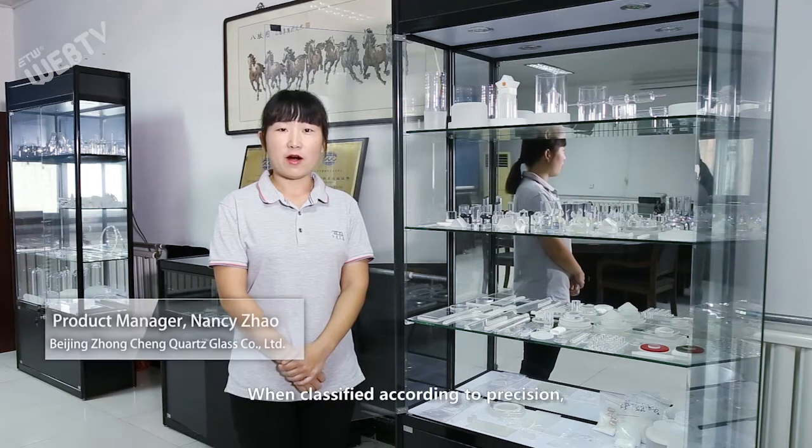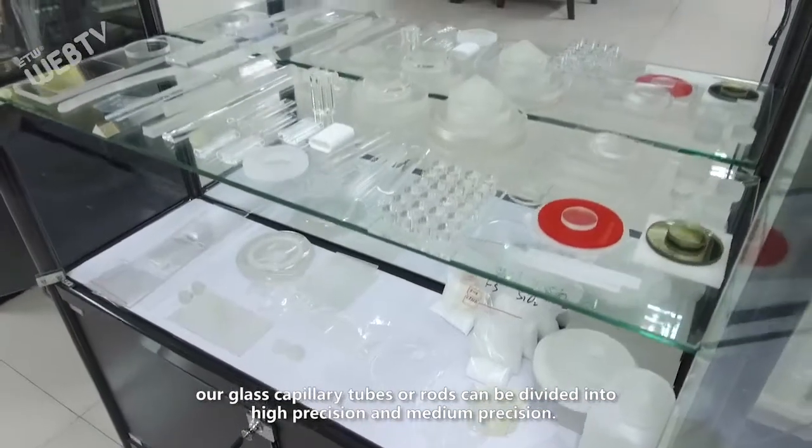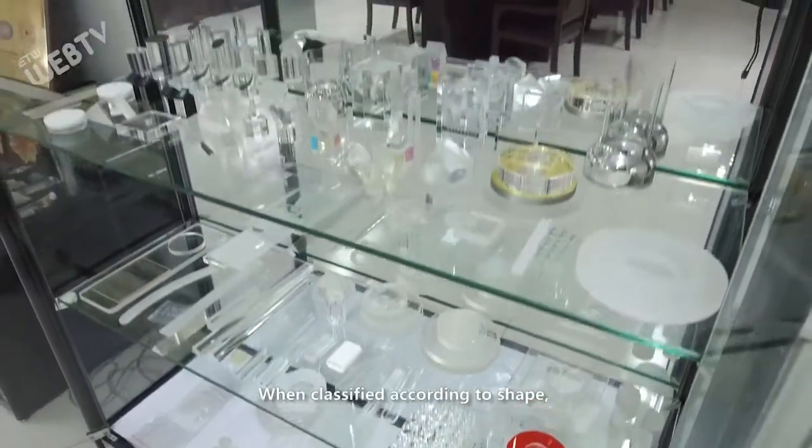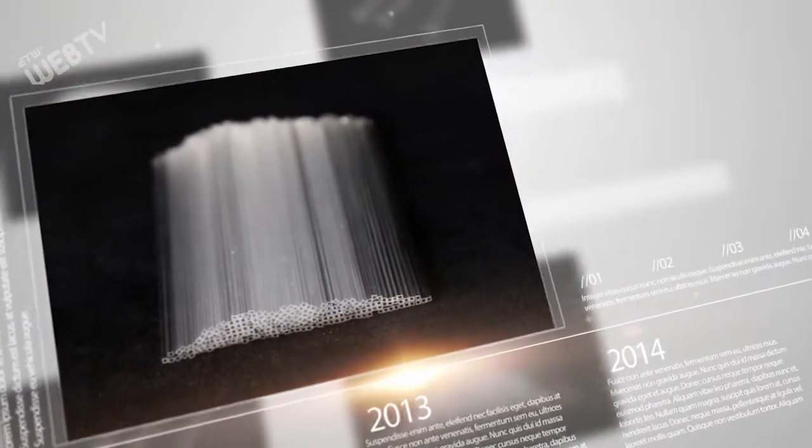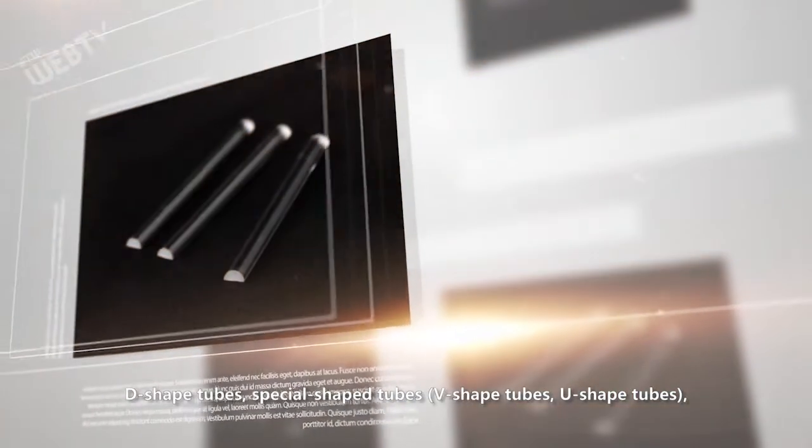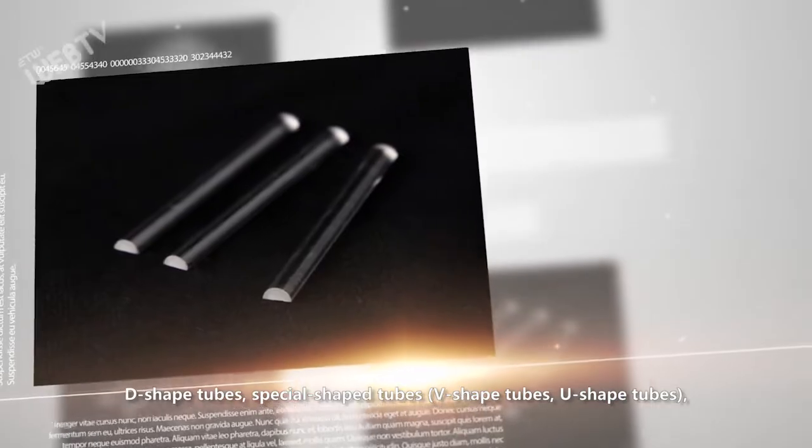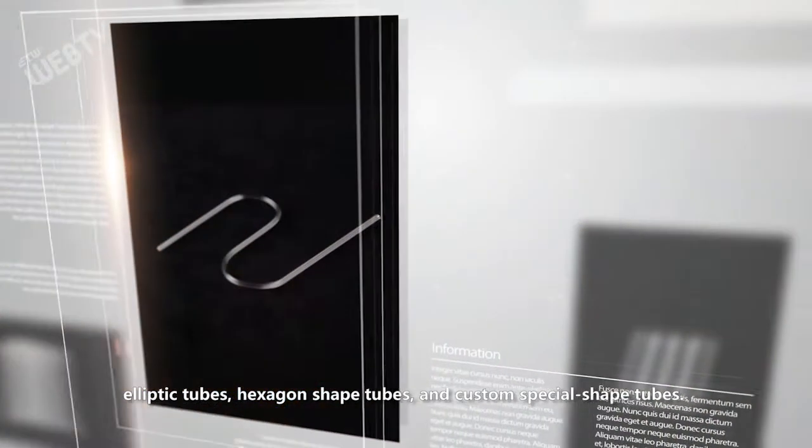When classified according to precision, our glass capillary tubes or rods can be divided into high precision and medium precision. When classified according to shape, our glass capillary tubes or rods are divided into standard quartz capillary tubes, square shaped, cone shaped, D-shaped tubes, special shaped tubes, elliptical tubes, hexagon shaped tubes, and custom special shaped tubes.